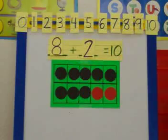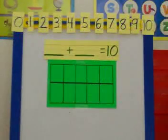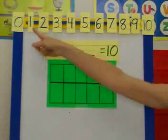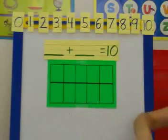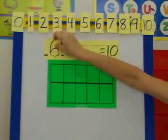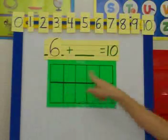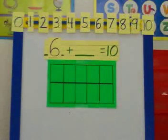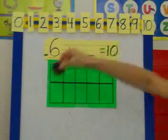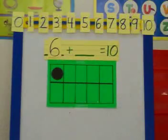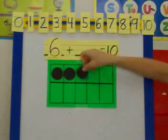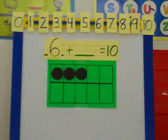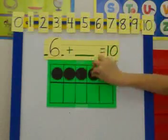Okay, we're going to try that again. I'm going to choose a new number, 0 through 10. And I choose 6. I'm going to put my 6 there, and I'm going to fill my tens frame with the 6 dots.